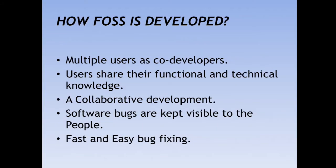How is FOSS developed, and who owns it? It's a community or group initiative where multiple users work as core developers. Users share their technical and functional knowledge to build a product that addresses a solution in society or an end user problem. It's a collaborative development. The software bugs are kept visible to the people, so since transparency is high and community support is amazing, there will be fast and easy bug fixing.